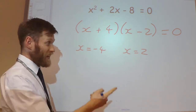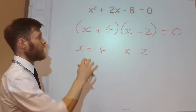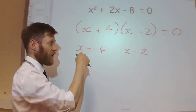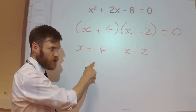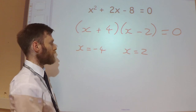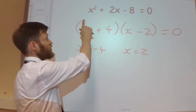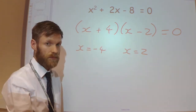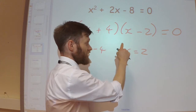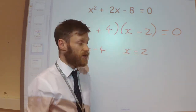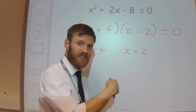The factor theorem is basically this, but in reverse. Rather than saying I know what a factor is therefore I know what a root is, we're now going to say: if I know the root, then I know the factor. So if I know that when I substitute minus 4 into the equation I get 0, then I know that x plus 4 must be a factor. Similarly, if substituting 2 gives 0, then x minus 2 must be a factor. It's just a reverse process.